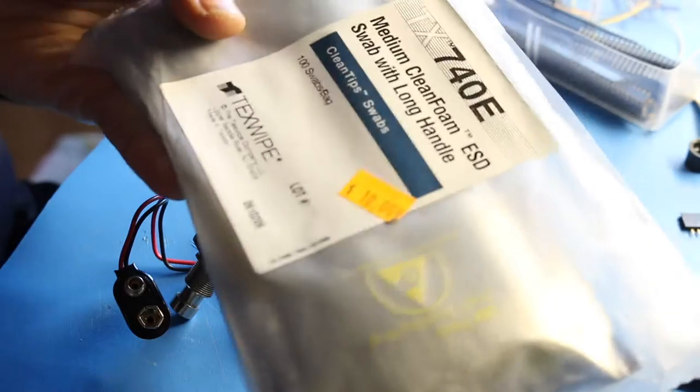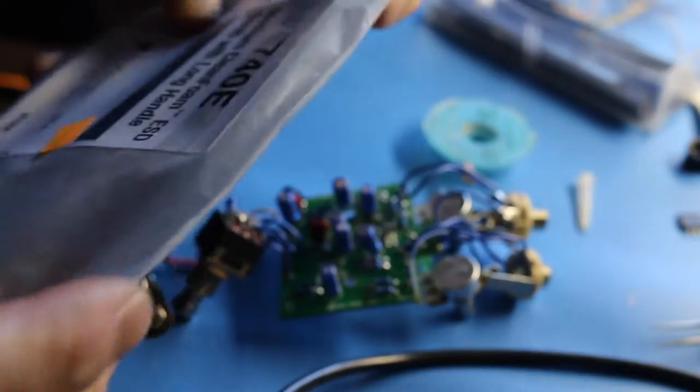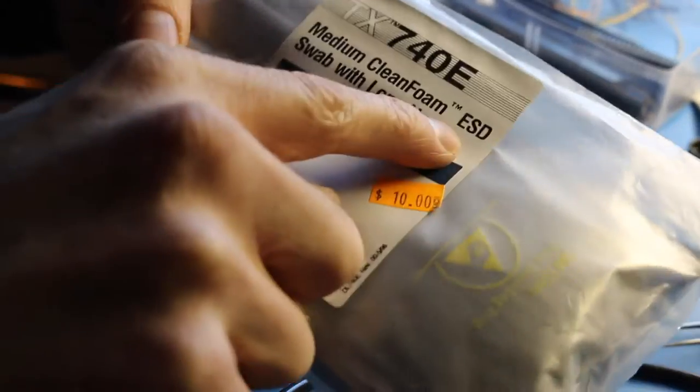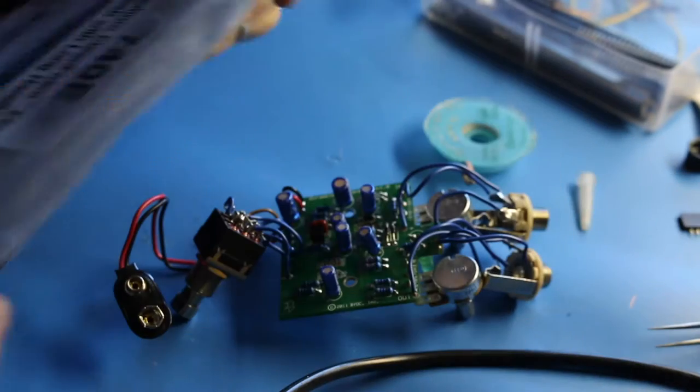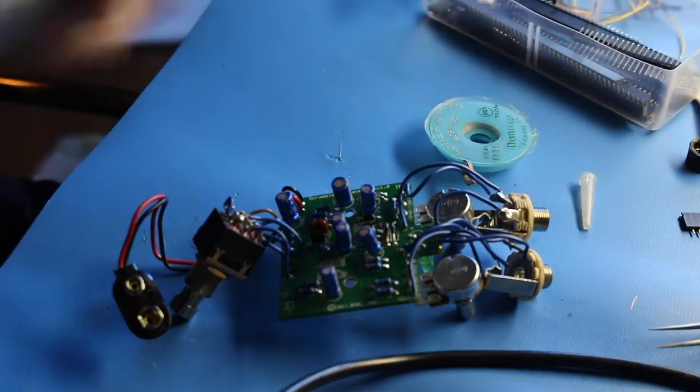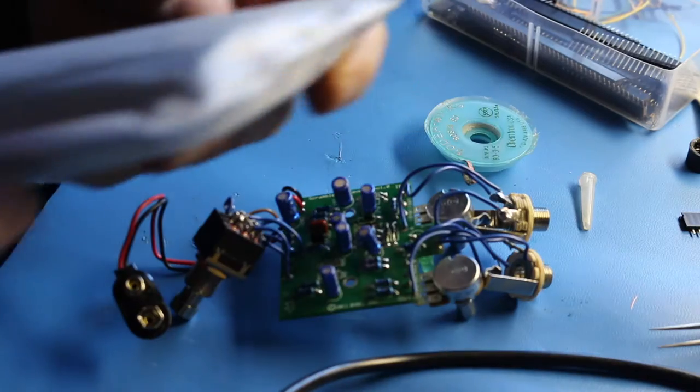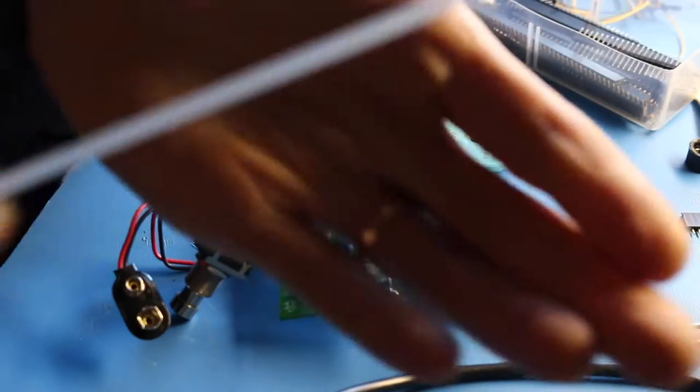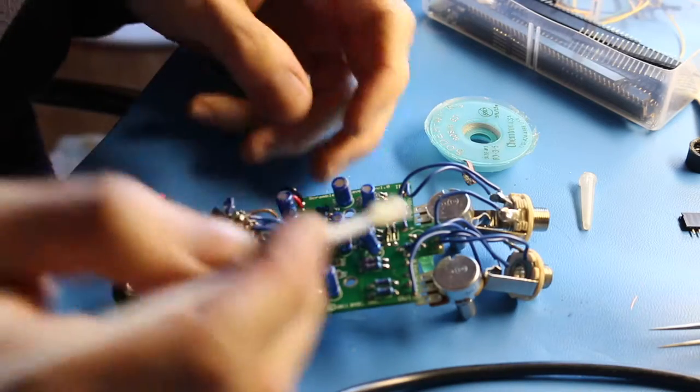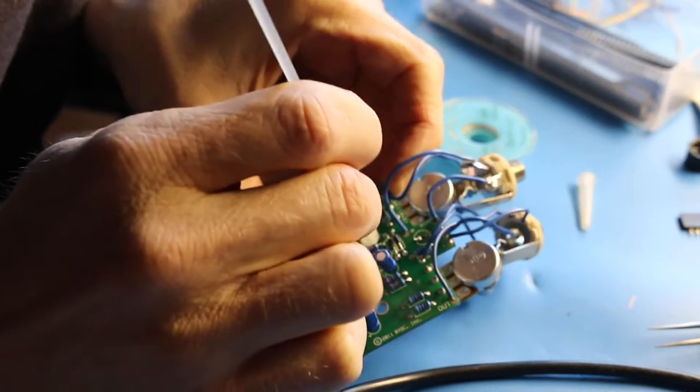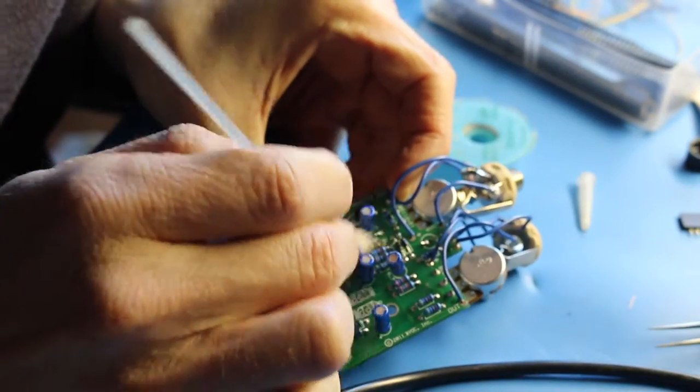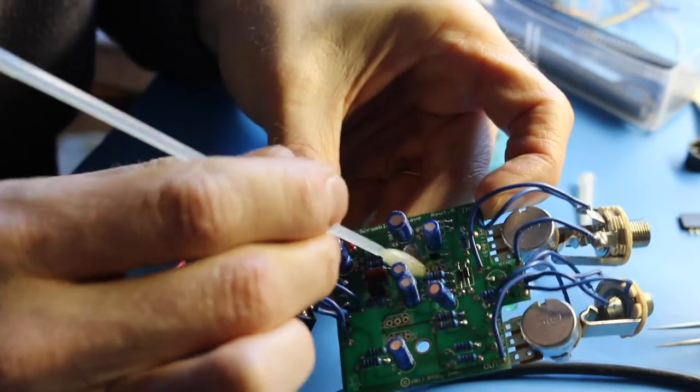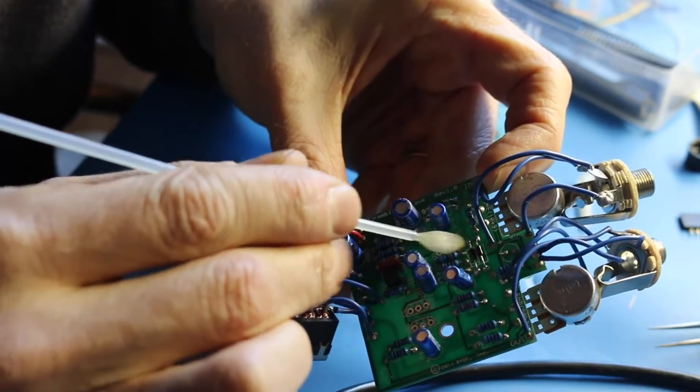I got these from Surplus Gizmos too, five bucks. Medium clean foam ESD swabs. Probably could just use a Q-tip as well, but. Look at that, you can use a shot. All right, finally. Now they're in another bag. Going on. Oh. Nice thing about these is that they don't leave any fuzz like the Q-tips do.